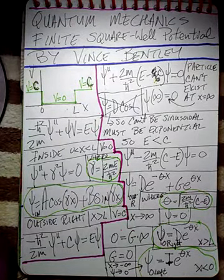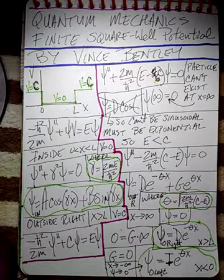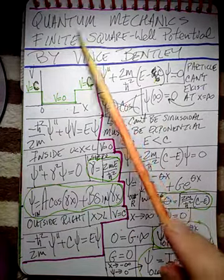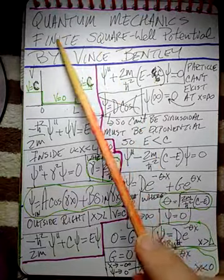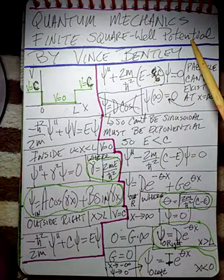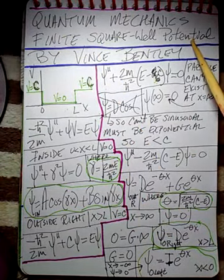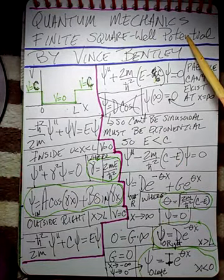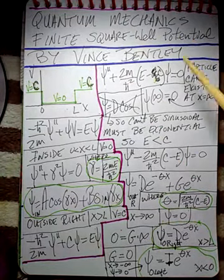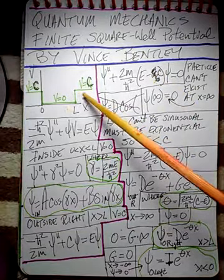This is the second of my quantum mechanics potential well lectures. This one is going to deal with something called a finite square well potential. We'll be solving Schrödinger's equation for a finite square well potential. You'll be doing some hardcore quantum mechanics here.